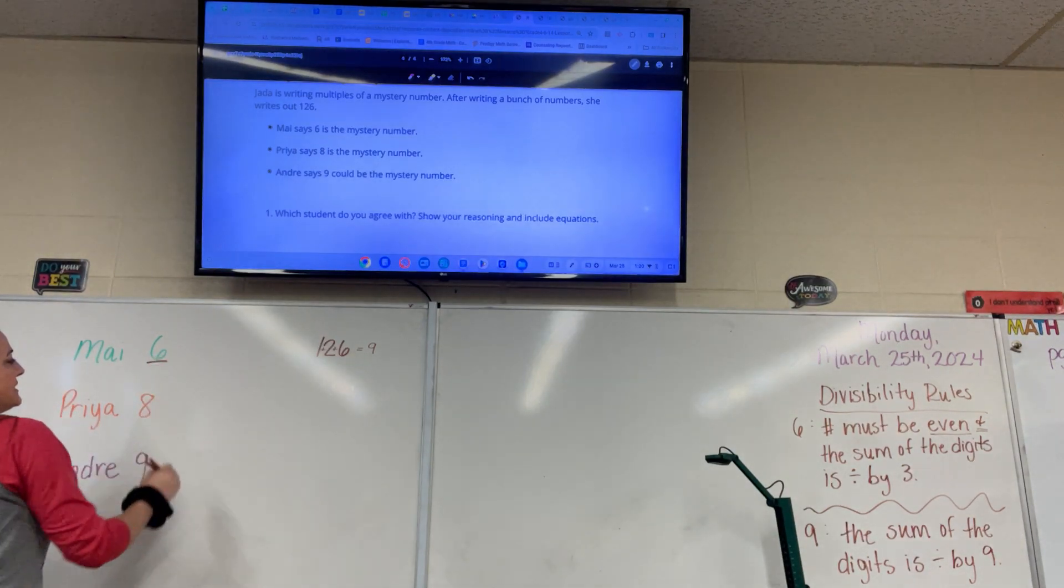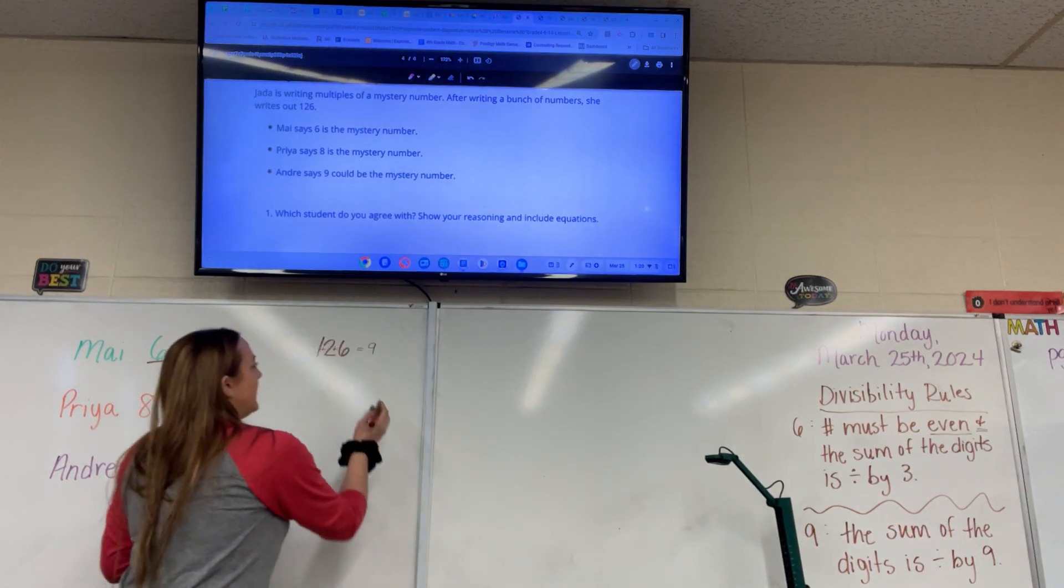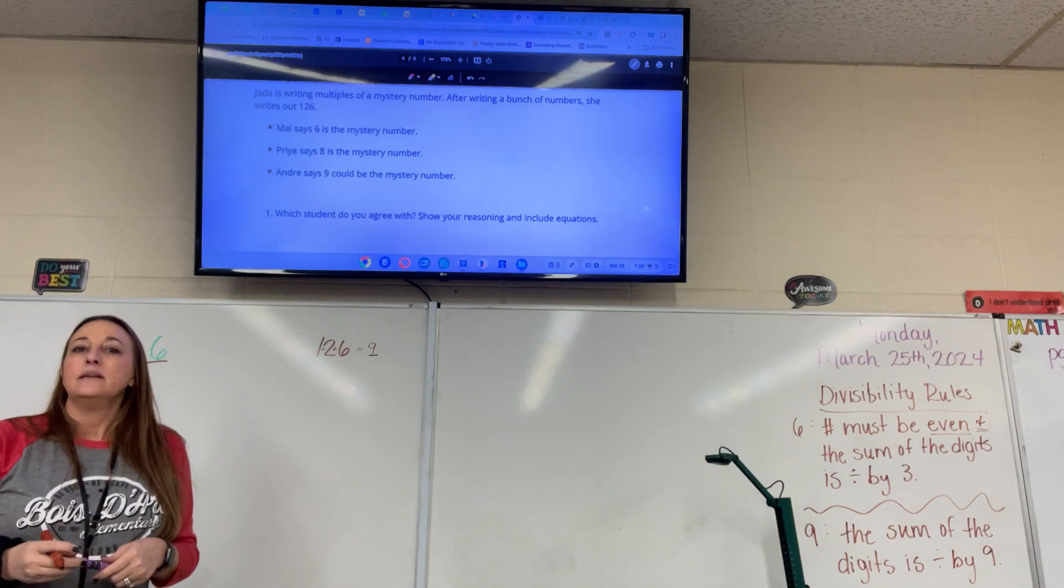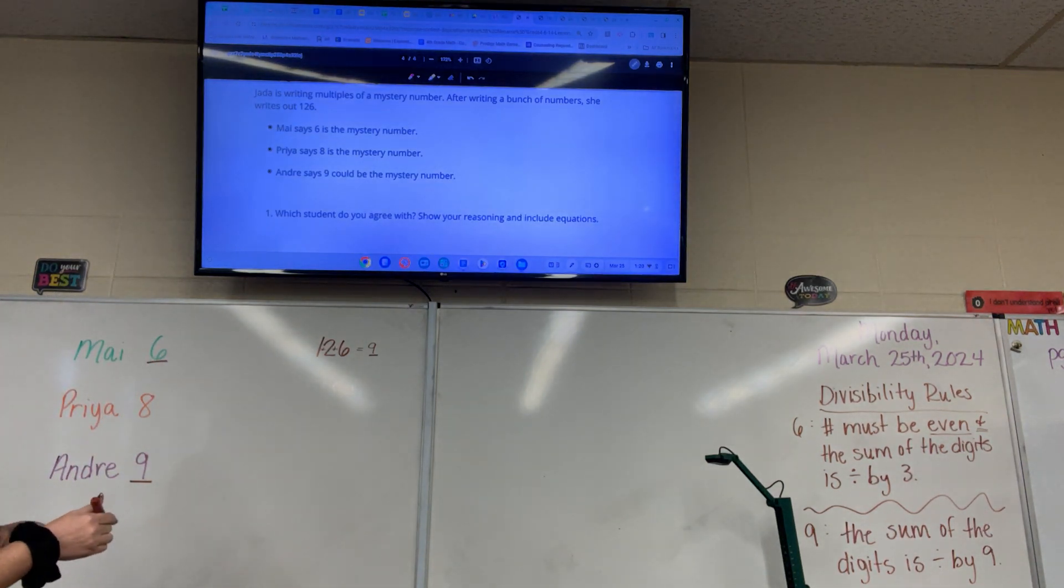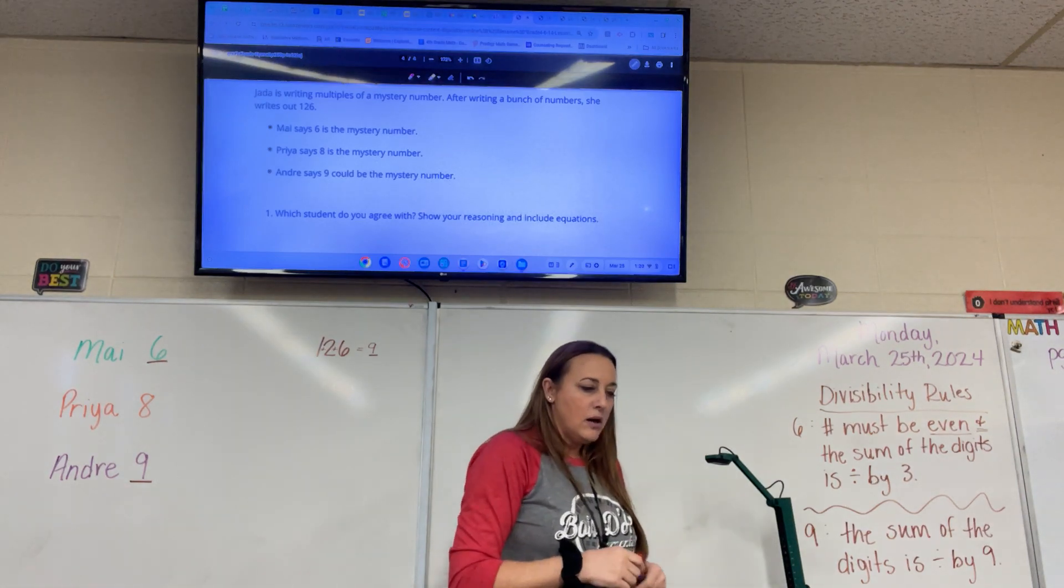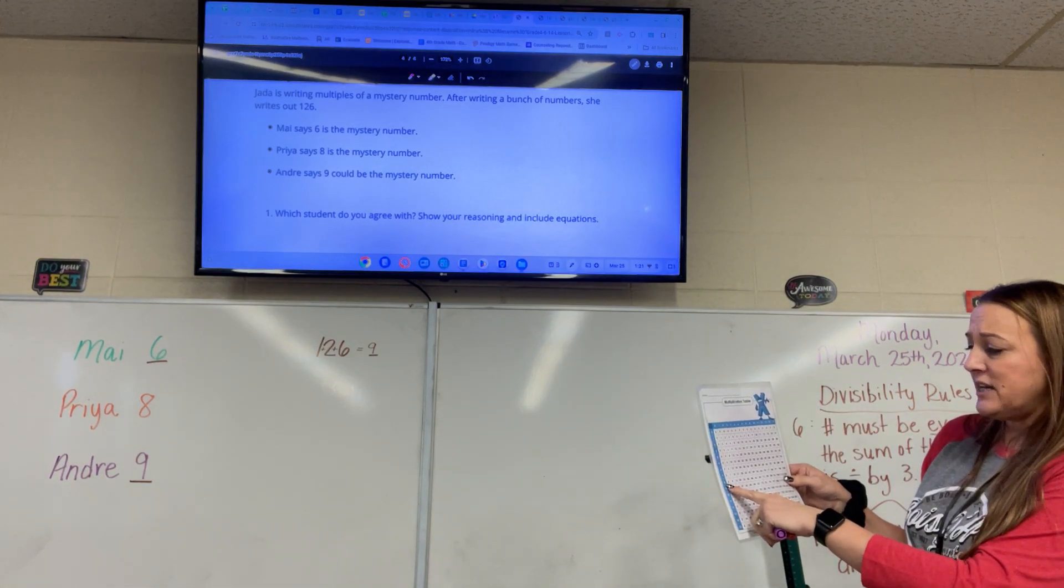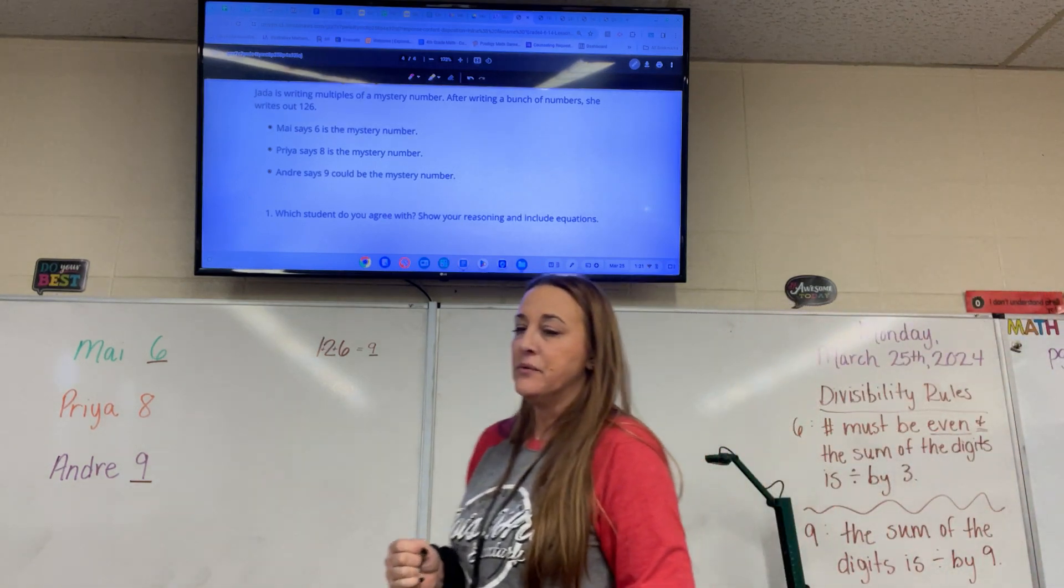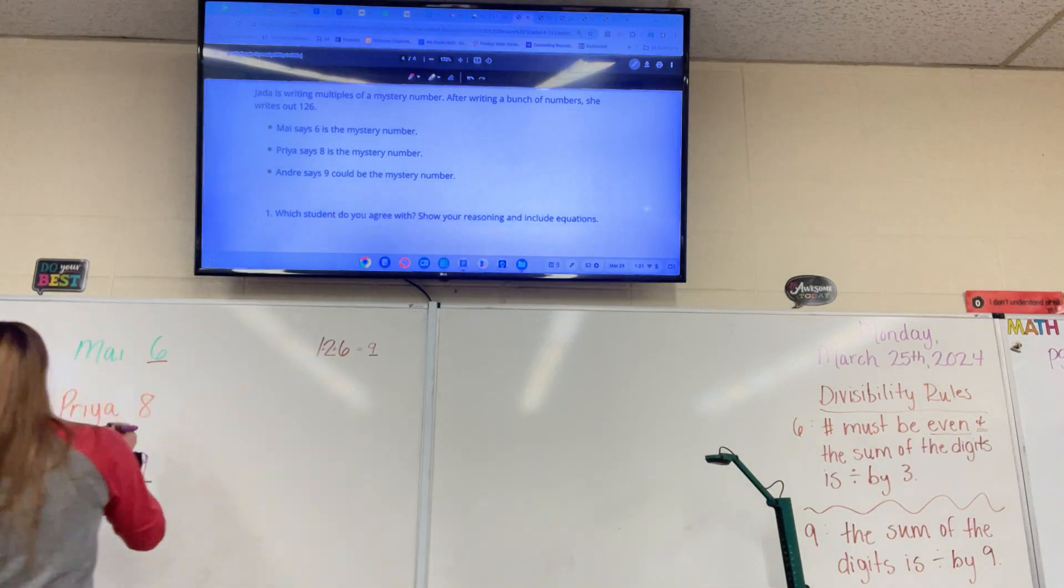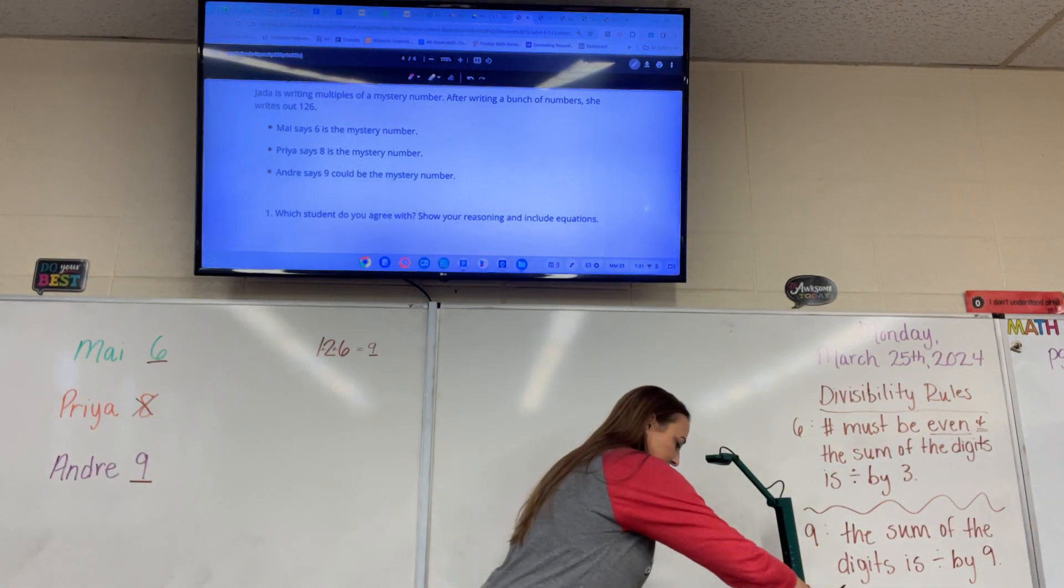126 is a multiple of 6. Okay. The divisibility rule for 9 is the sum of the digits is divisible by 9. Is 9 divisible by 9? You have 9 cookies and 9 kids, can you do that? Yes. Absolutely. So 9 is also a factor of 126. So now on the check in on the 8. We can see on our multiplication table that the 8 row goes up to 120. If we add 8 to 120 what do we get? 128. So 8 is out. So Priya, sorry Priya. Bye bye. Okay. So which students do you agree with?